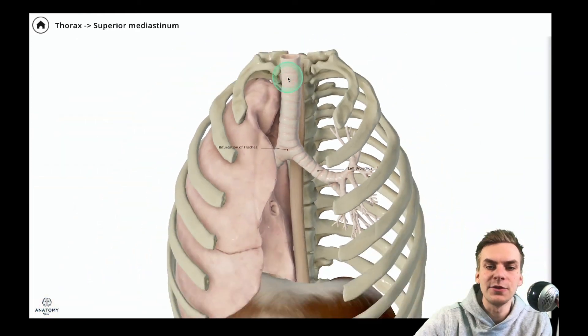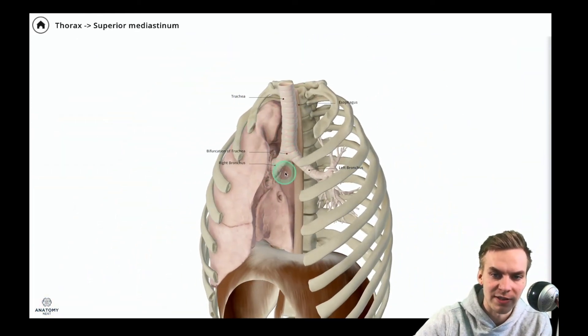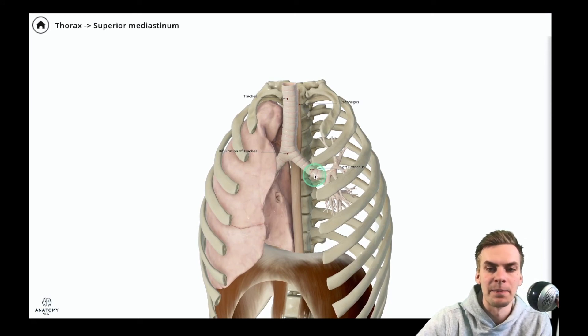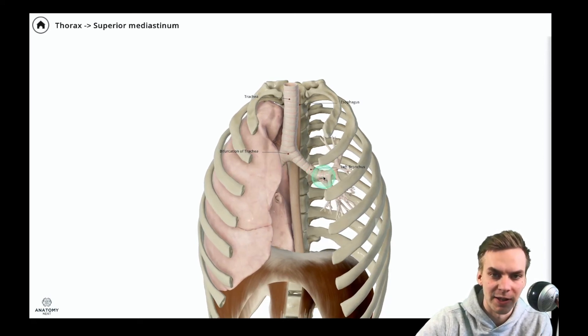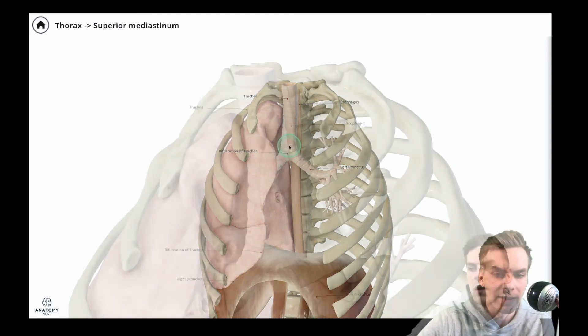If we zoom out a little bit we can see that the right bronchus is actually oriented a little bit more vertical compared to the left bronchus. And due to this fact foreign bodies tend to get stuck more often in the right bronchus or in the right lung.